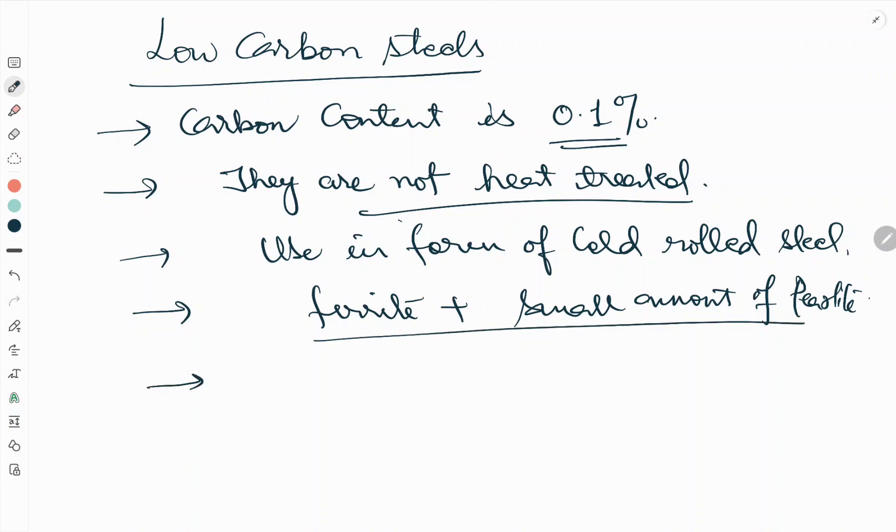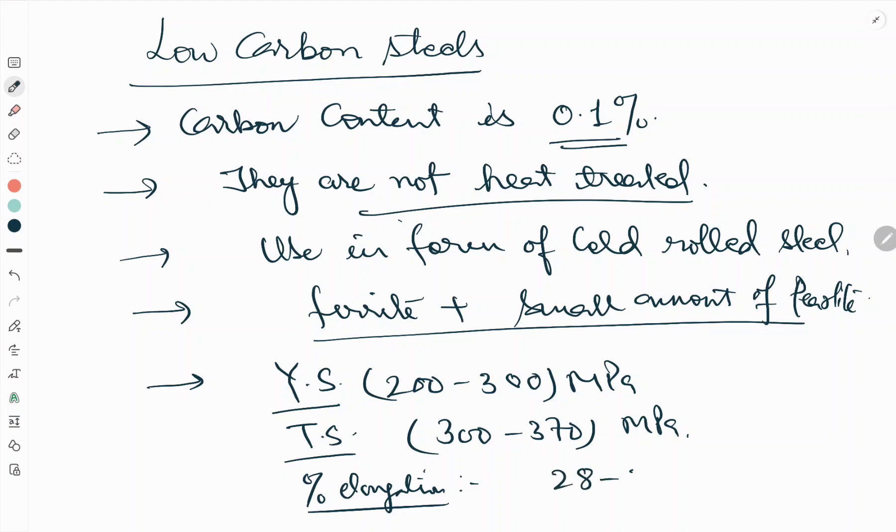Now we will see the typical mechanical properties of low carbon steel. The yield strength is around 200 to 300 megapascal, tensile strength 300 to 370 megapascal, and percentage elongation is around 28 to 38.